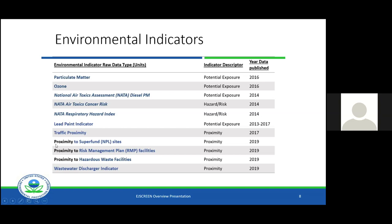There is also a lead paint indicator — that is simply pre-1960 housing. There's a traffic proximity indicator, and then three indicators which relate to proximity to EPA-regulated facilities: proximity to Superfund sites, proximity to facilities with Risk Management Plans (usually chemical storage facilities), and proximity to hazardous waste facilities. Last, and this is one of the newly updated indicators, we have a wastewater discharger indicator based on a combination of proximity to NPDES majors and RECI modeling. All that data is linked within the website, and if you have individual questions about data, there's an email set up at ejscreen@epa.gov.